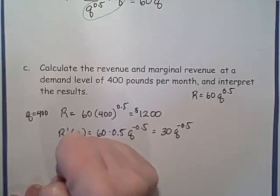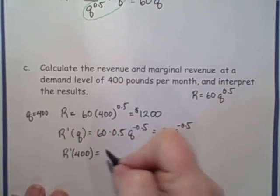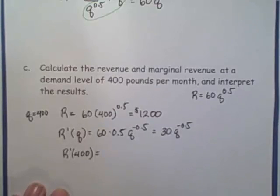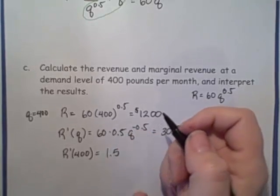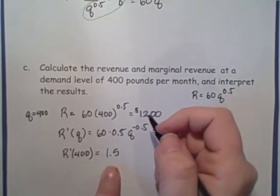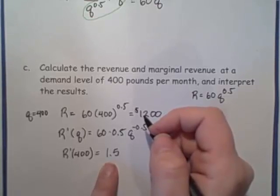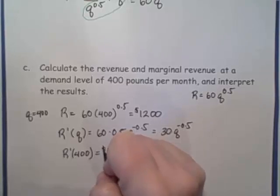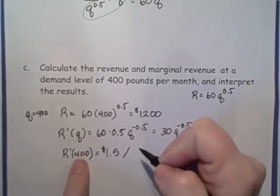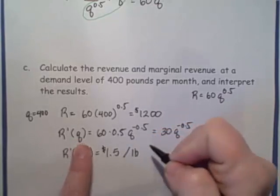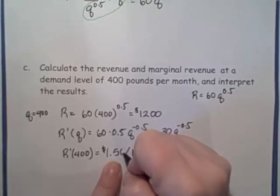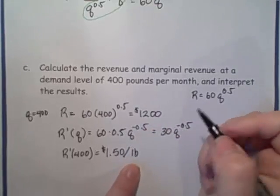If we plug in 400, we get 30 times 400 to the negative 0.5. So that ends up being 1.5. Okay, now let's make sure we understand the units on this. This is, revenue is in dollars, so it's going to be dollars per, and then the units of our Q is pound. So it's going to be $1. We're going to write $1.50 per pound.